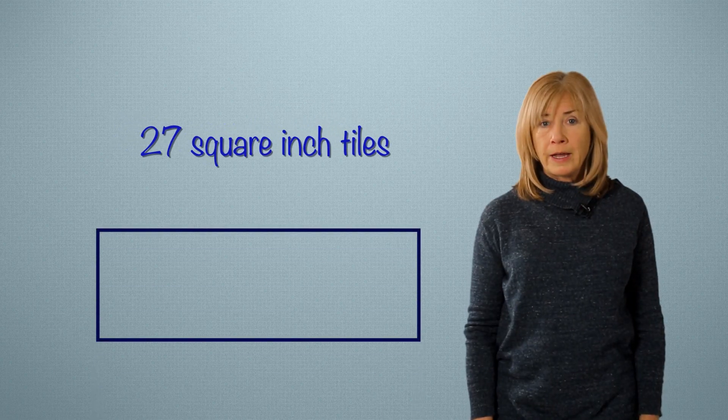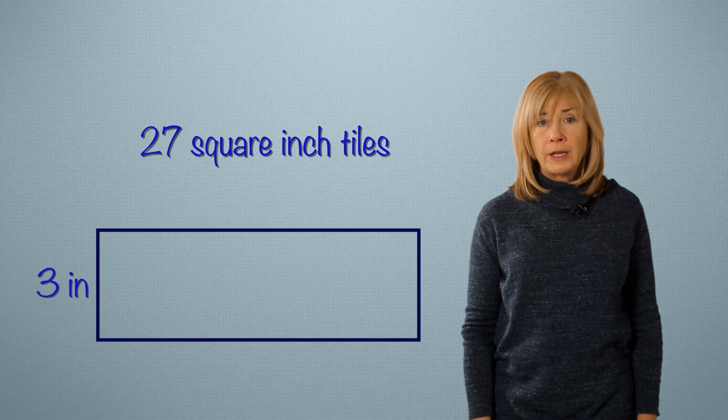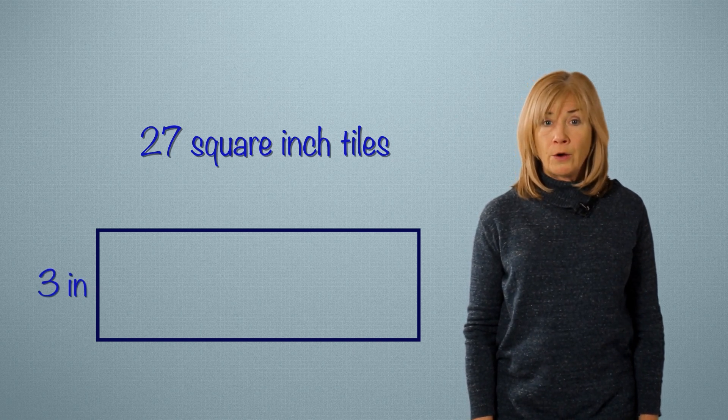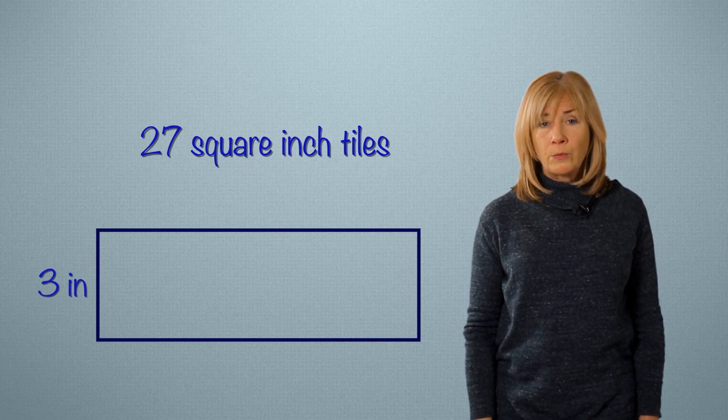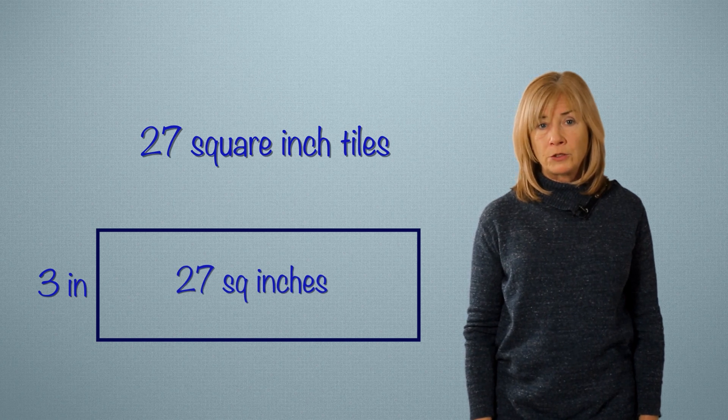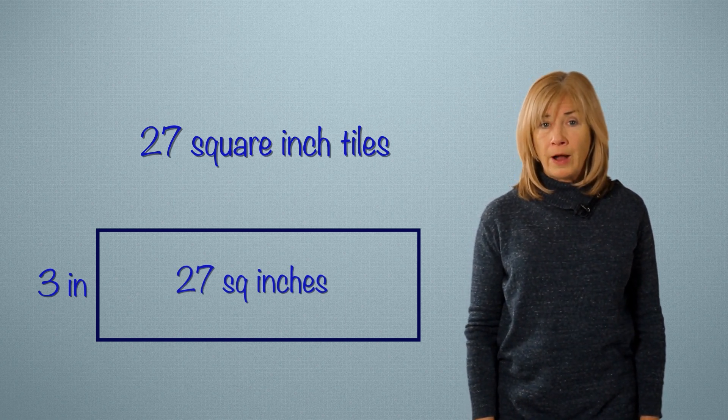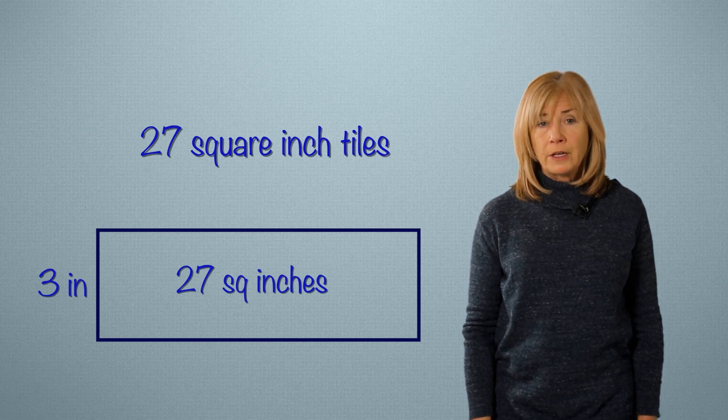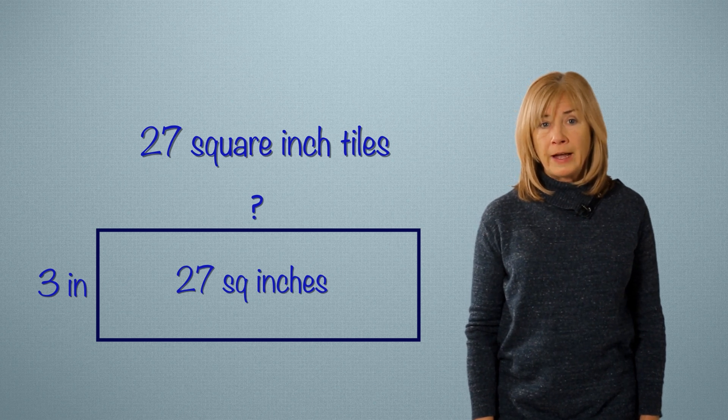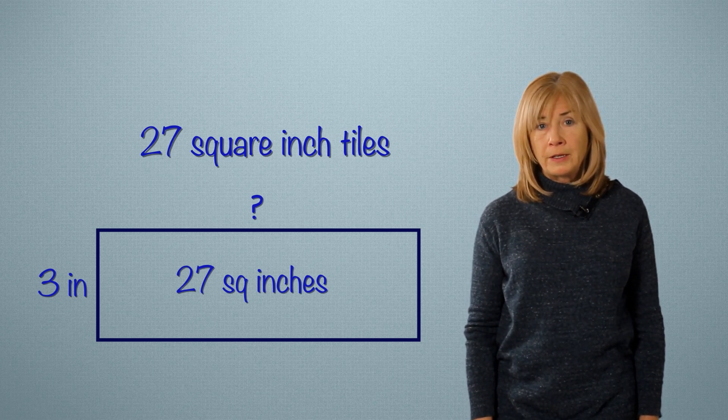Which diagram represents this problem? One side of my rectangle is going to be 3 inches, and I know that the total area will be 27 square inches. So, this rectangle diagrams our problem. The missing side here is marked with a question mark. We want to find out how many tiles will be in each row.